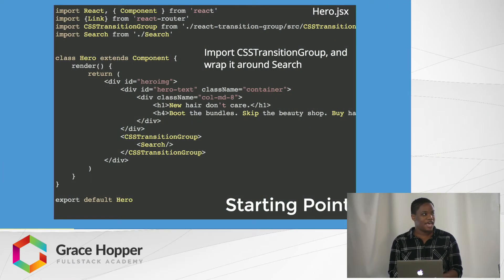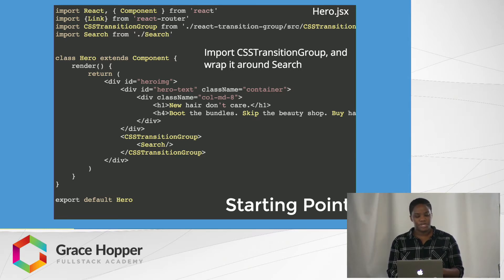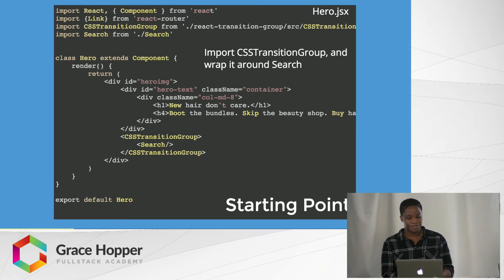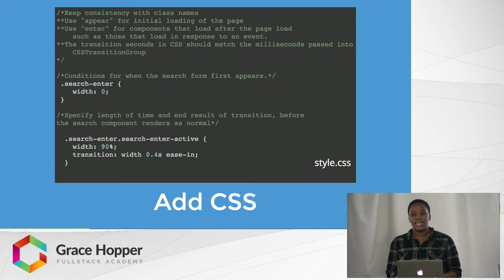Here's our starting point. We have a hero component, which is the large hero image on the home page. And I'm going to render a search form. We need to wrap anything we're going to use CSS Transitions for in a CSS Transition Group component, which we import from Facebook's React Transition Group. Then we have to write some CSS. So here I have search-enter and search-enter-active. You can think of that as a starting point and the ending point of the animation.